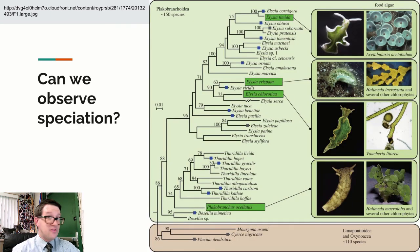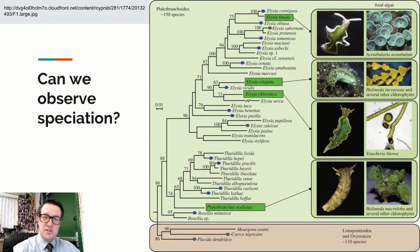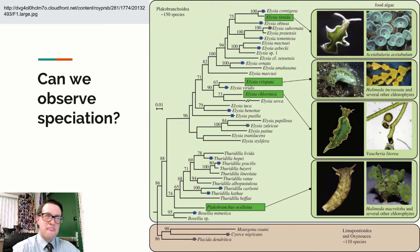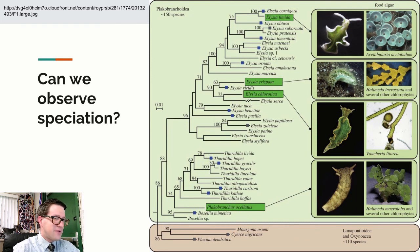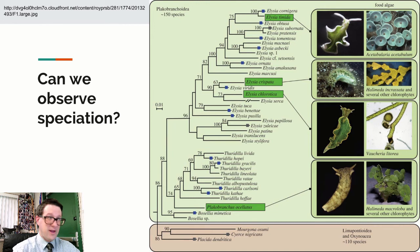We've been witnessing the potential rise of a new species with certain sea slugs, because they absorb chloroplasts and algae from things they eat. We're watching the potential formation of photosynthetic animals. So far they're not photosynthetic on their own, but it seems increasingly likely we'll watch this event within a lifetime or two, depending on selective pressure.